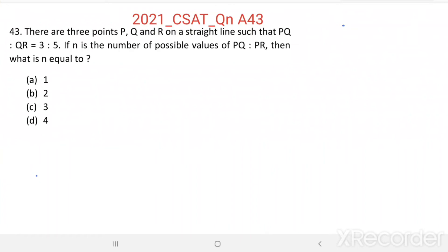There are three points P, Q, and R on a straight line such that PQ to QR equals 3 to 5. If n is the number of possible values of PQ to PR, then what is n equal to?